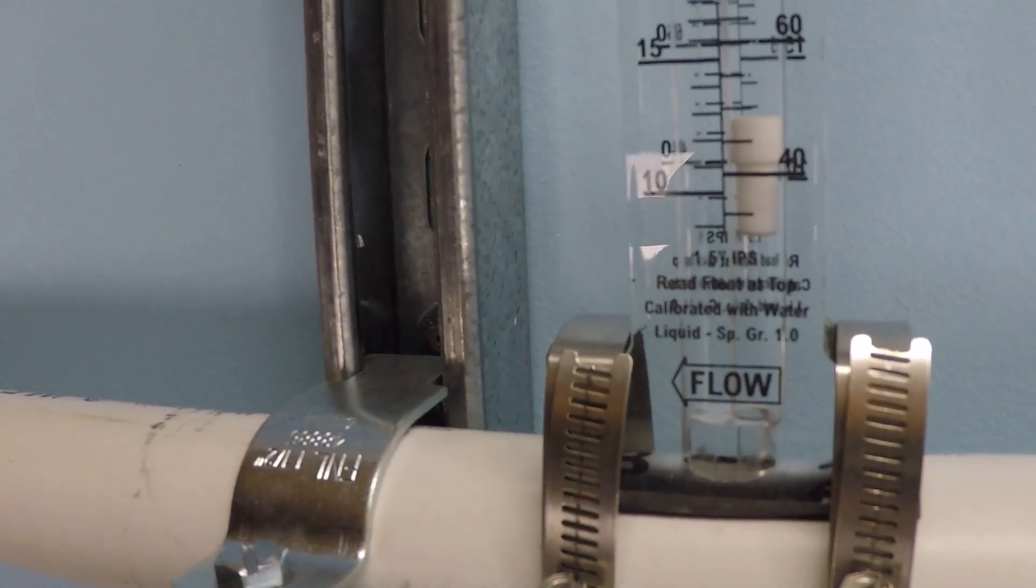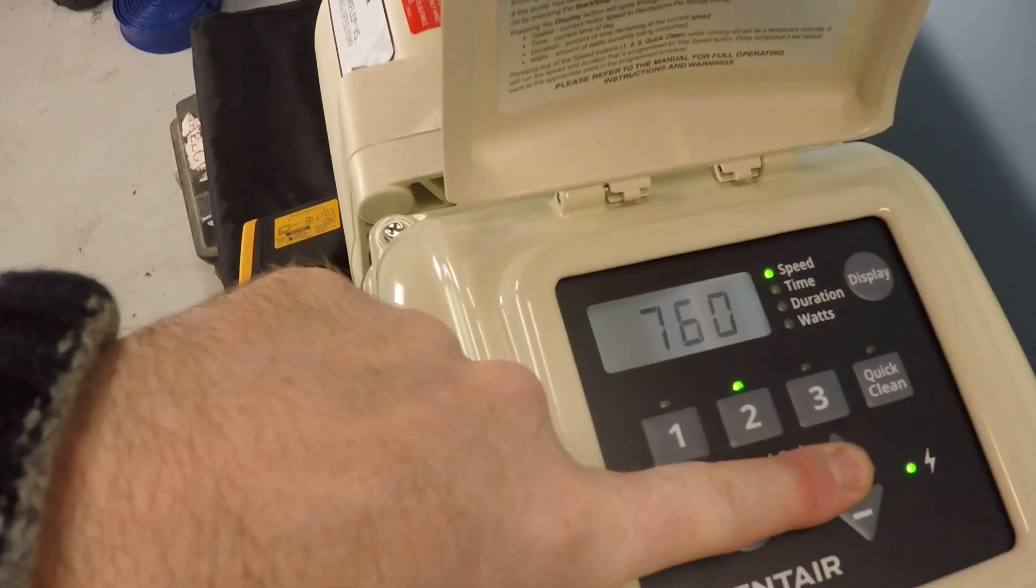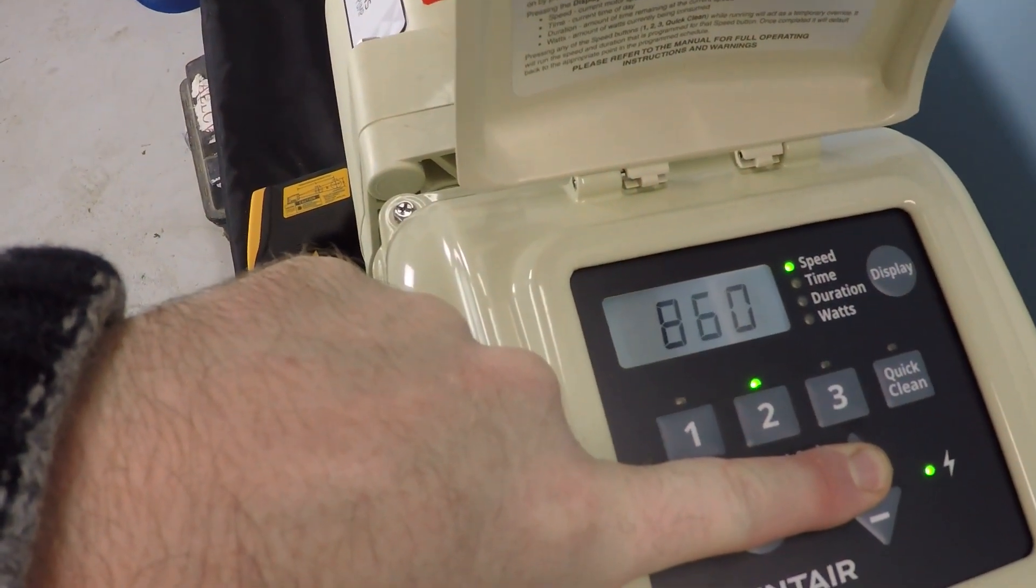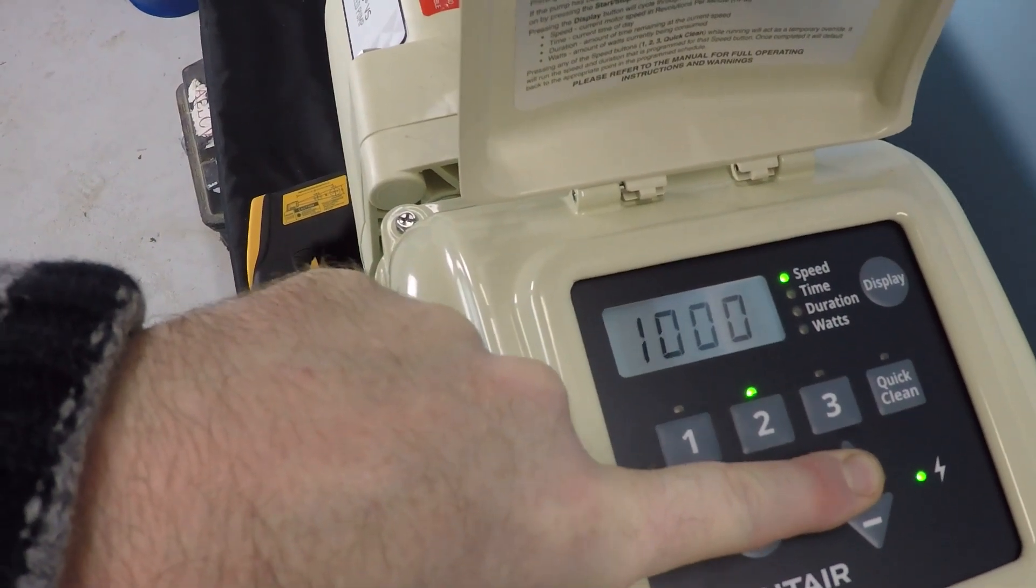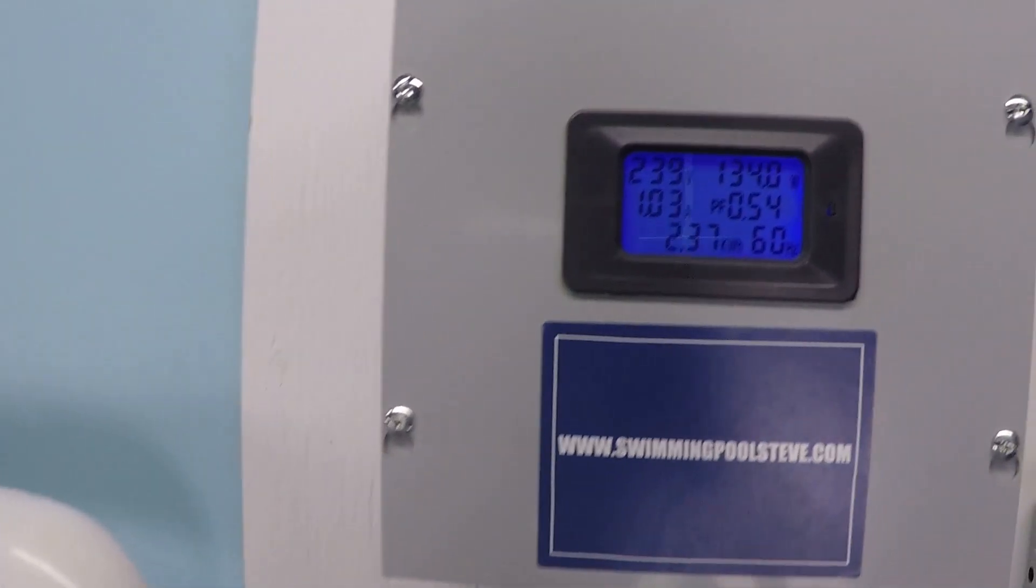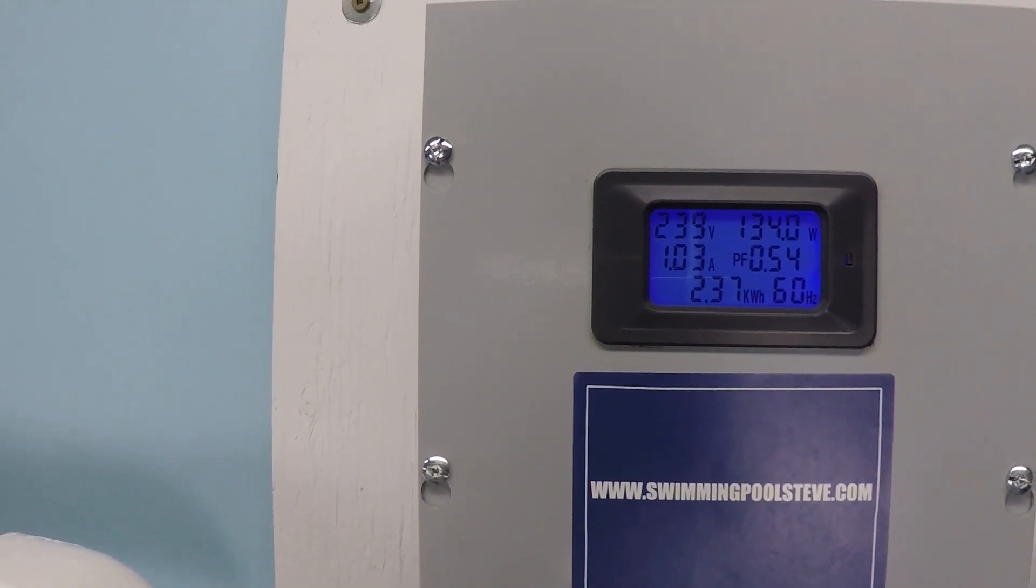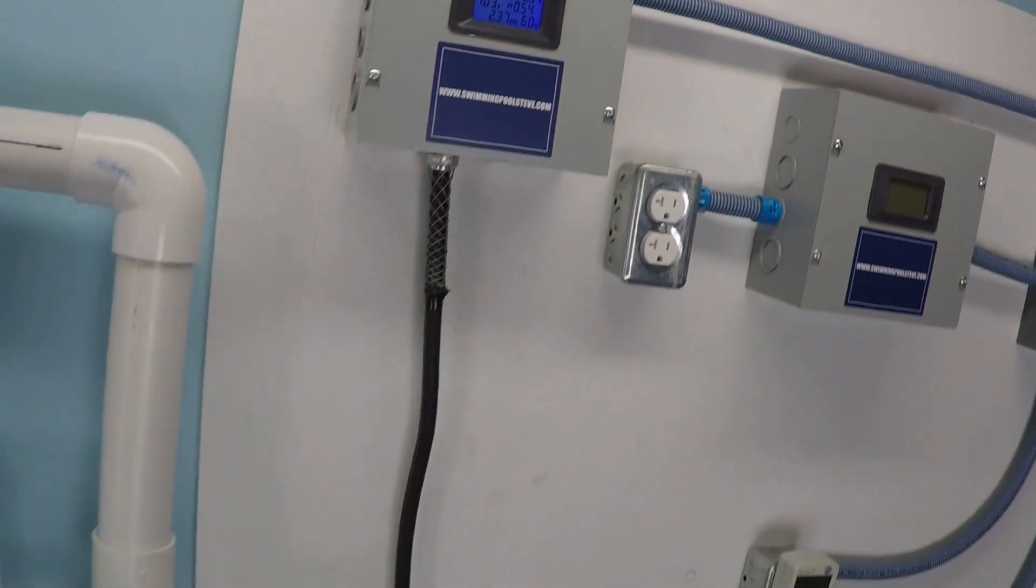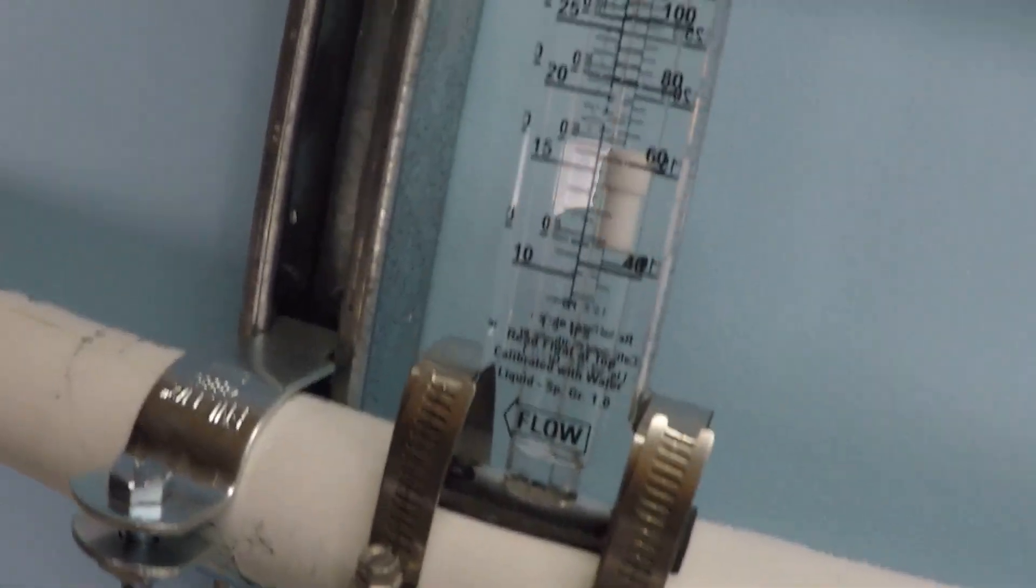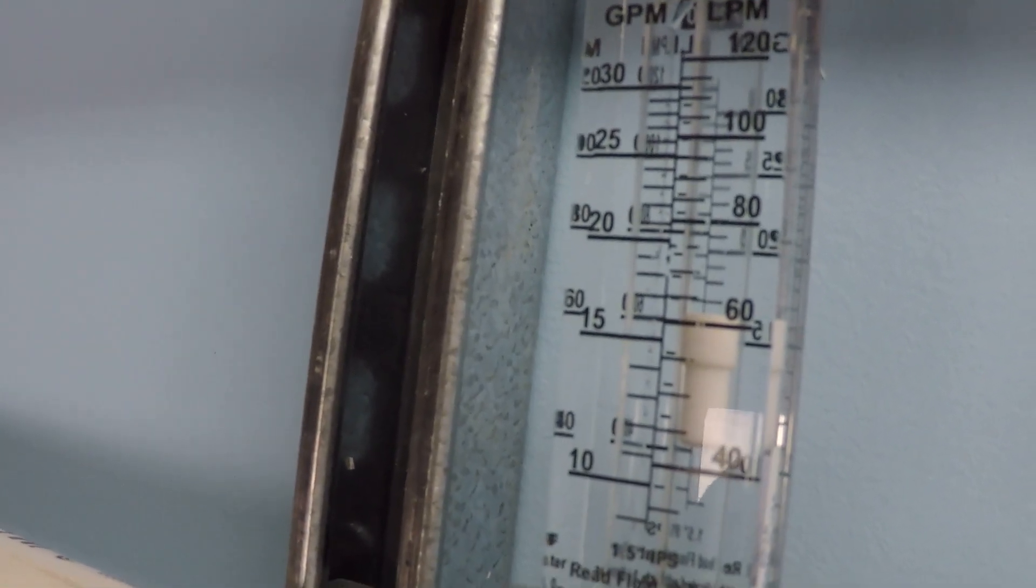1000 RPM, just over 1 amp, 1.03 amps, 134 watts, seeing about 16, 16 and a half gallons per minute.